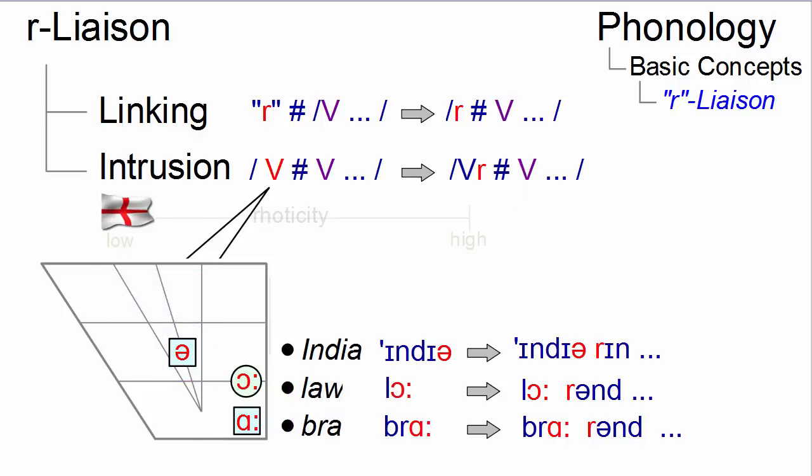So, in RP, we can get India in the 19th century, law and order, bra and shirt, and so on.